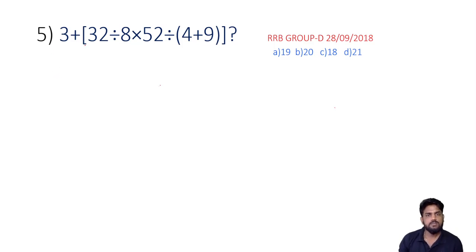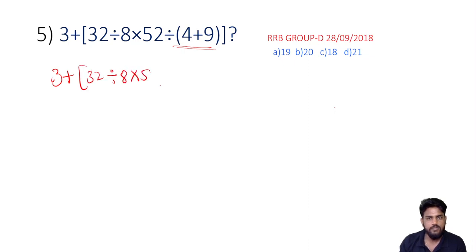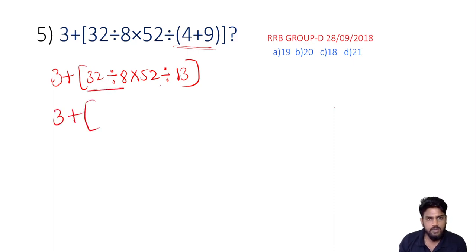If we go to the next question, 1 plus 4 is 32 divided by 8. 8 into 52 divided by 4 plus 9. 3 plus 32 divided by 8 into 52 divided by 4 plus 9 is 13. 3 plus 3 plus 32 divided by 8 is 4. 22 divided by 13 is 4. 5 divided by 12 is 4. 52 divided by 13. 5 plus 3 plus 4 into 4 is 16. 3 plus 16 is 19.